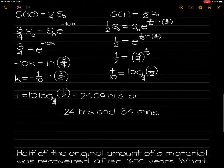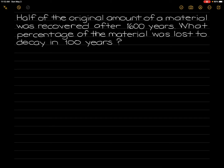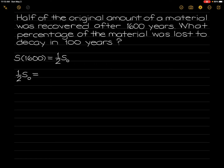For our third and last example, half of the original amount of a material was recovered after 1,600 years. What percentage of the material was lost to decay in 100 years? We know that at 1,600 years, we have half of the initial amount present. So, one-half times the initial amount is equal to the initial amount times e raised to the negative 1,600 times k.